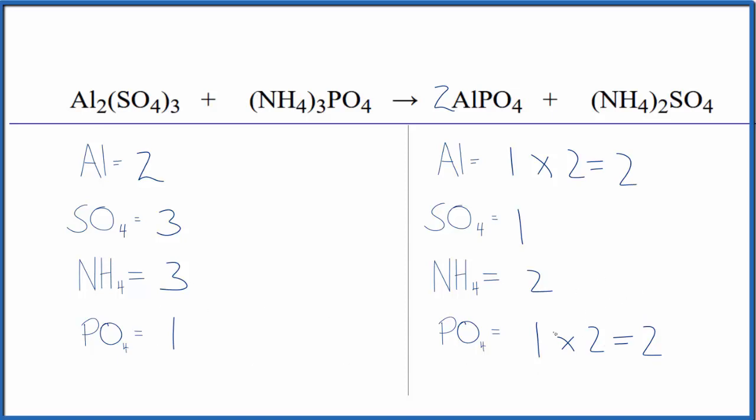Might as well balance the phosphates now. We have two here and one here, we'll put a two here. Two times the one phosphate, that gives us two of those. And then we have the ammonium ion, three ammonium ions times two. Three times two, that gives us six.